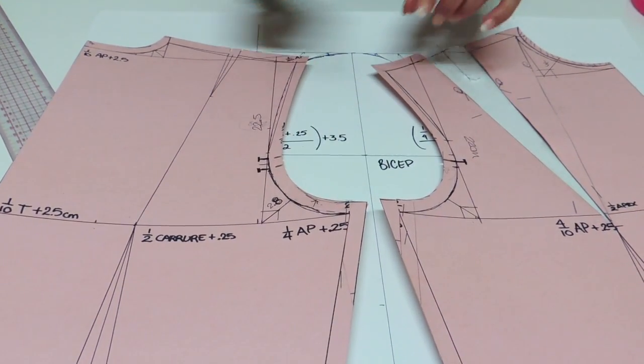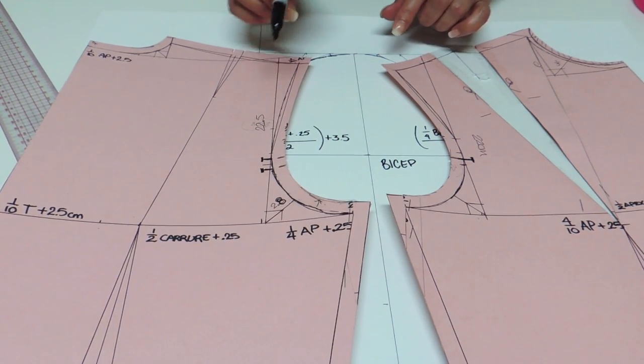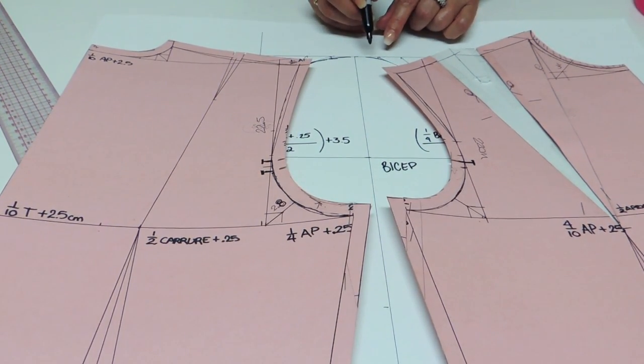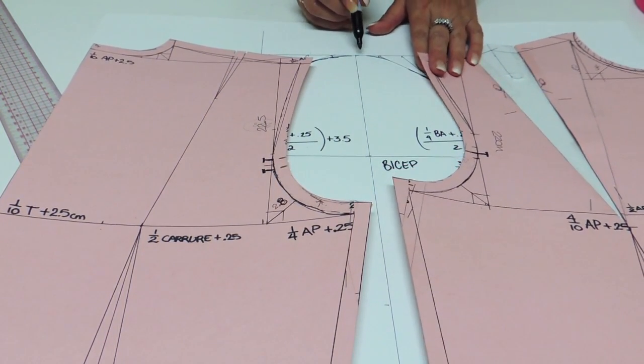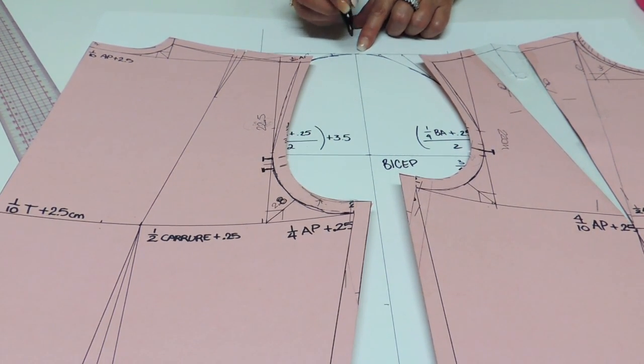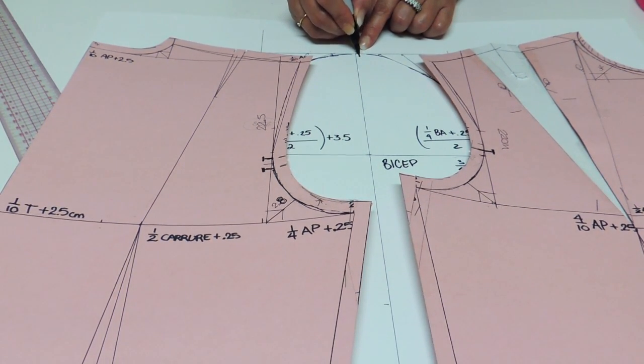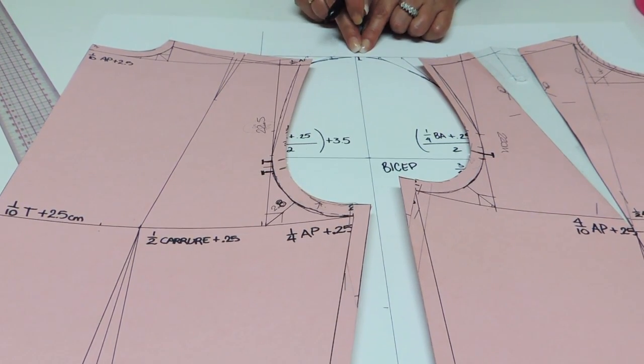My notch should be half of the difference towards the smaller size. So my front is smaller. My difference is 0.5cm. So my notch is going to be at 0.25 towards the front.